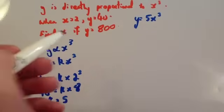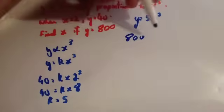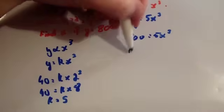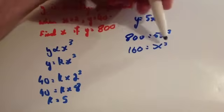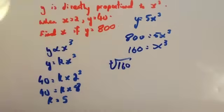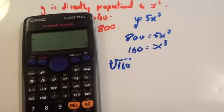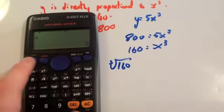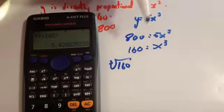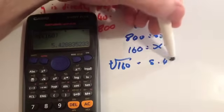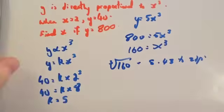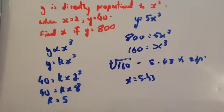This time we're finding X, and Y equals 800. So write 800 equals 5X cubed. Divide by 5 to get 160 equals X cubed. Then take the cube root of 160 using your calculator — shift above the square root button, then 160 — and you get 5.428, which is 5.43 to two decimal places. So X equals 5.43.